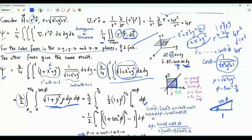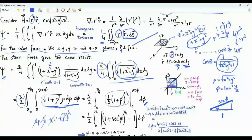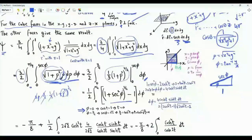We can integrate easily with respect to rho. The antiderivative with respect to rho is one-third times (1 plus rho squared) to the power 3 over 2. Differentiating this confirms correctness: we get (3/2)(1/3)(1 plus rho squared)^(1/2) times 2 rho by the chain rule, which equals rho times the square root of 1 plus rho squared. We then apply the lower and upper limits of integration.